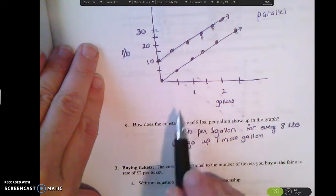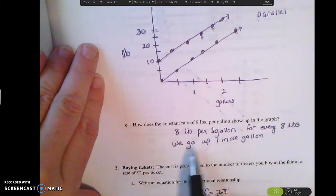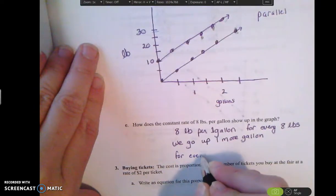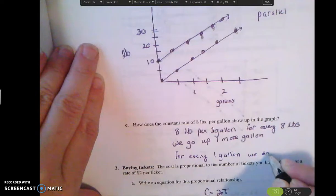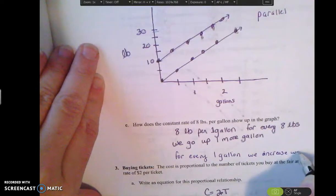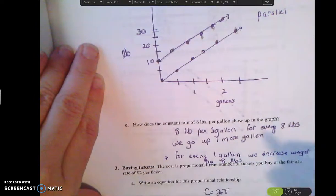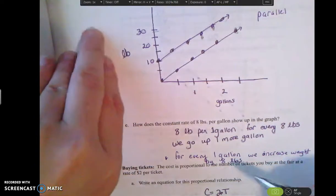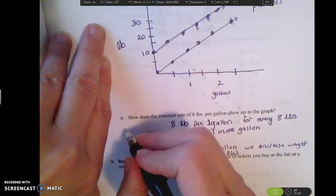And it says for every 8 pounds per 1 gallon? That means for every 8 pounds we go up 1 more gallon or better yet for every 1 gallon added we go up, we increase our weight by 8 pounds. So it would be better to state it this way because of our dependent variable. The amount of gallons depends on the weight or the weight depends on the gallons. So this is what our graph looks like. So this 8 pounds is what we call our slope. It's our rate of change.